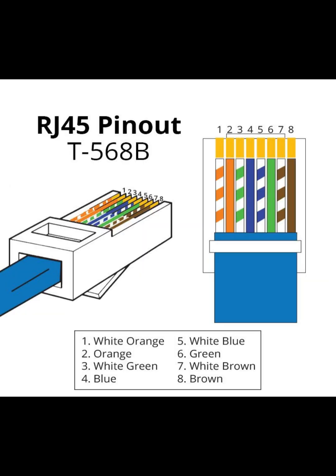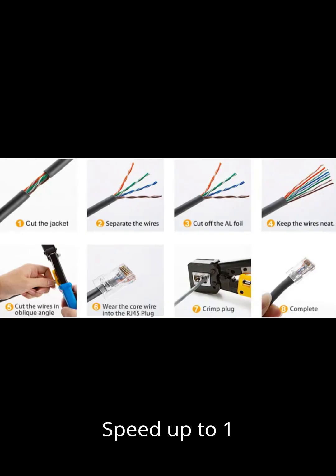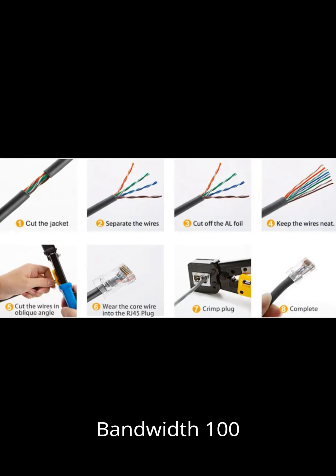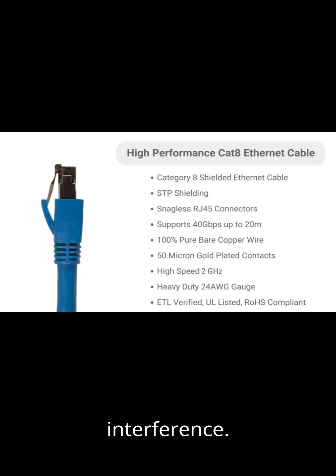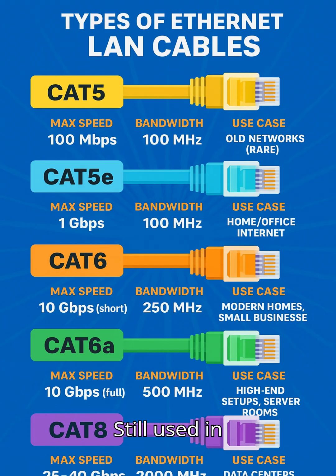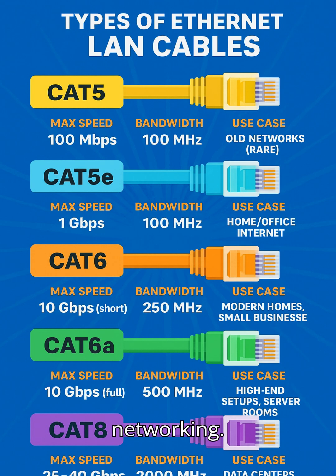2. CAT 5e (Category 5 Enhanced): Speed up to 1 Gbps, Bandwidth 100 MHz. Features reduced crosstalk and less signal interference. Still used in homes and offices for basic networking.